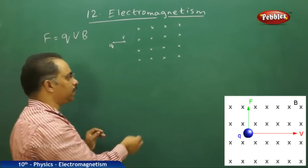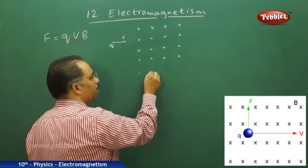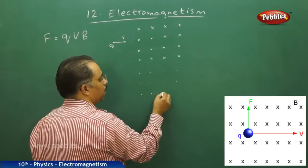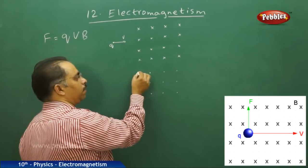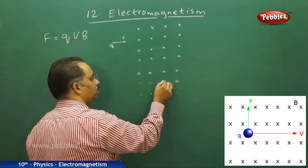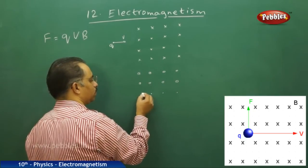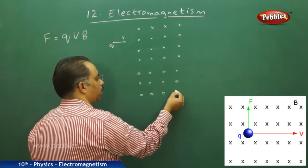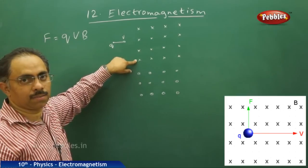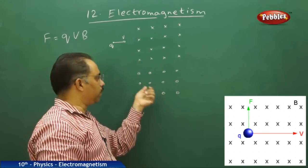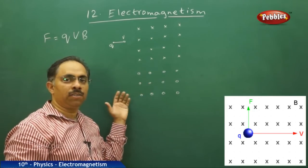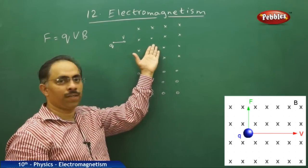Now imagine the situation is reversed — instead of the field going into the board, the magnetic field is coming out of the board. What we denote by coming out of the board is a dot with a small circle around it. Each dot with a circle represents a magnetic field line, indicating the field is perpendicular to the plane of the board but coming out — opposite to the previous case.